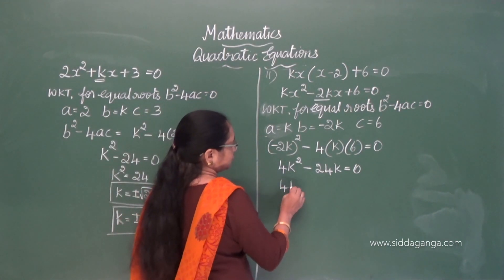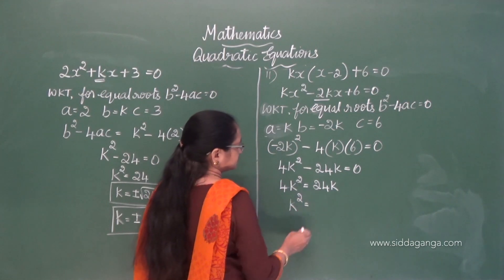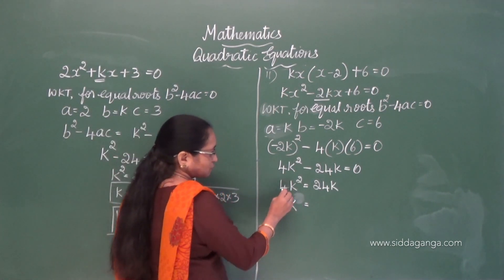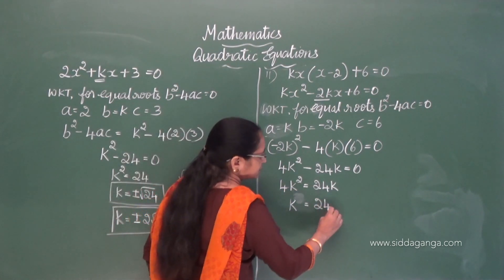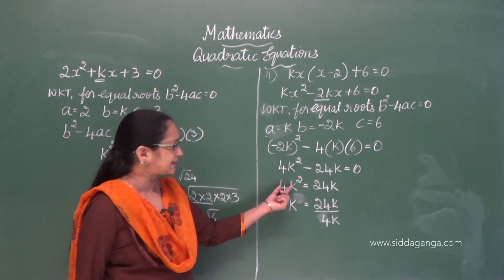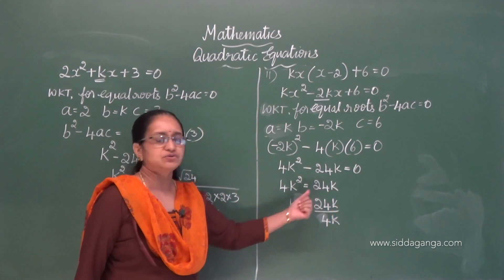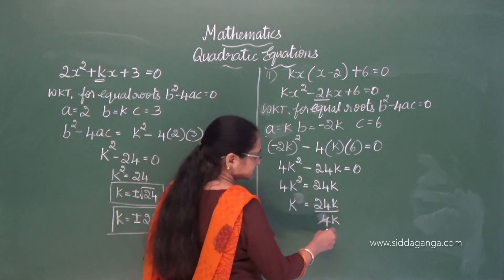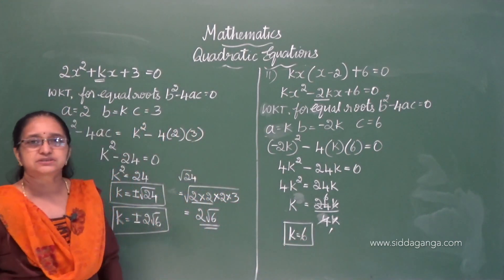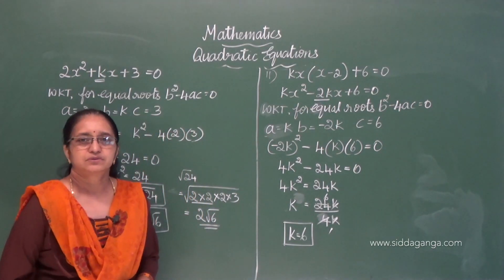So 4k² = 24k. Dividing both sides, 4k = 24, so k = 6. The value of k is 6 for the second problem.